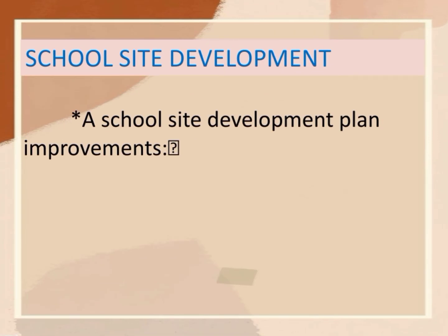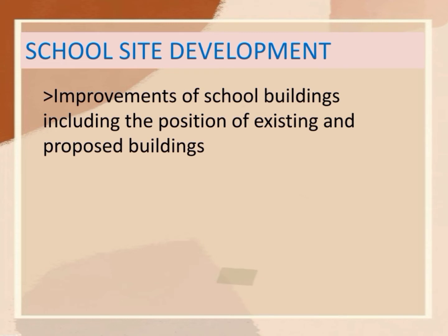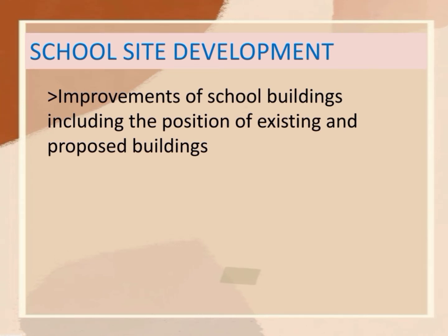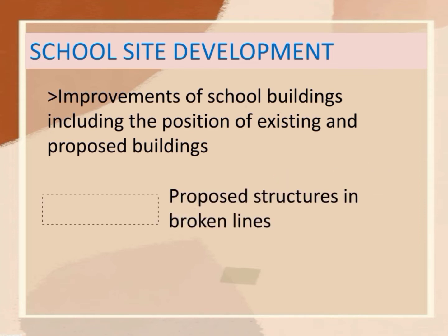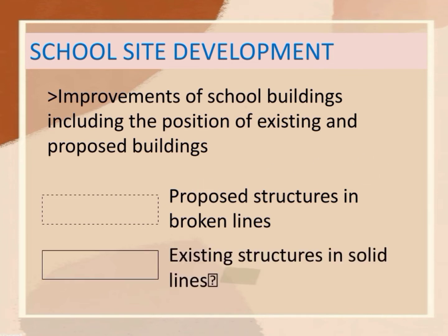A school site development plan shows the following improvements: improvements of school buildings including the position of existing and proposed buildings. These proposed building plans are important because they help to visualize what the end results will be like so that you can evaluate ahead of time and make revisions if needed. Proposed structures are shown in broken lines and existing structures in solid lines.